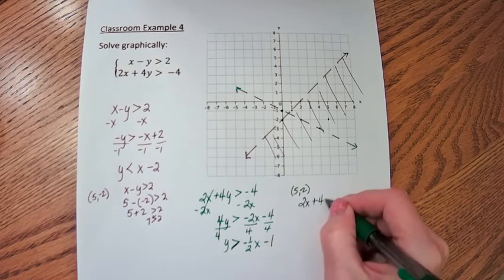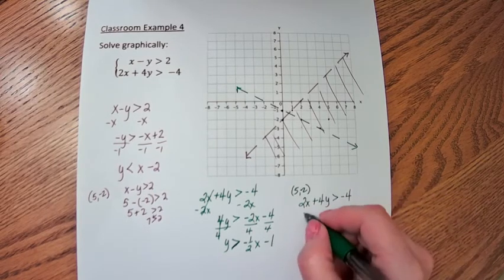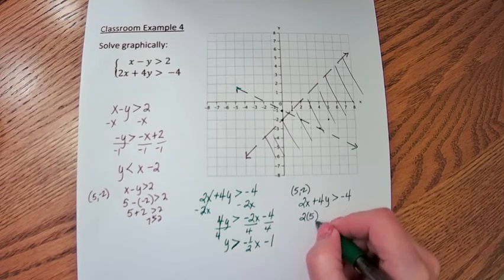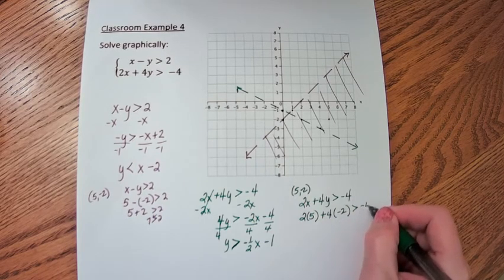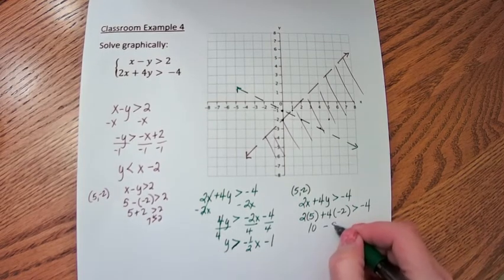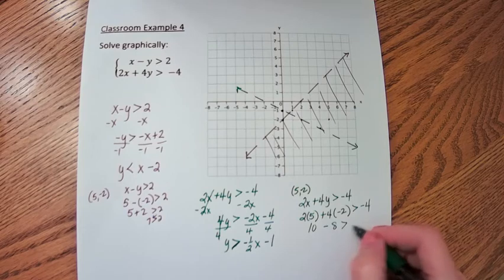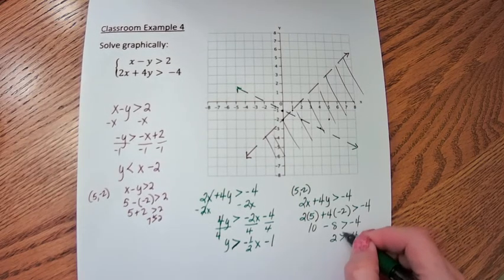So 2x plus 4y, is that greater than negative 4? Let's see. Plug in a 5 for the x. Plug in a negative 2 for the y. Is that greater than negative 4? That's 10 minus 8, greater than negative 4? Is 2 greater than negative 4? Yep.